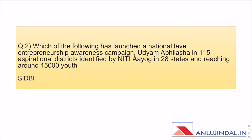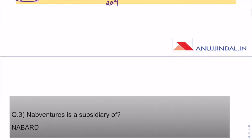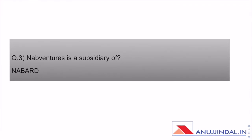Which of the following launched a national level entrepreneurship awareness campaign Udyam Abhilasha in 115 aspirational districts identified by NITI Aayog in 28 states, reaching around 15,000 youth? The entire aspirational districts topic as well as Udyam Abhilasha was covered in the Ministry-Wise schemes documents. Do go through them as they are important for Phase 2 of NABARD as well as Phase 1 and Phase 2 of RBI.